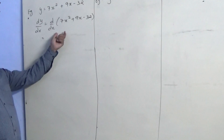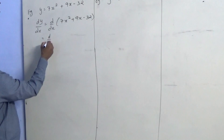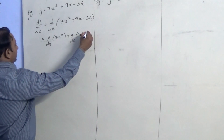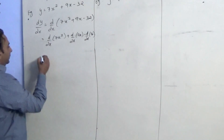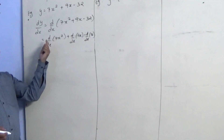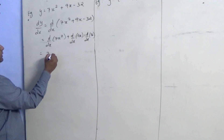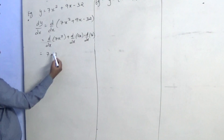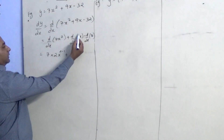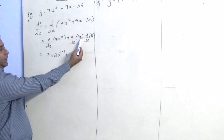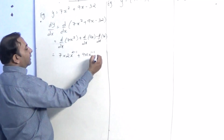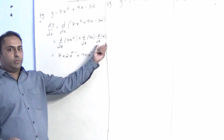We will multiply d by dx with each term. So d by dx of 7x square, plus d by dx of 9x, minus d by dx of 32. To find the derivative of 7x square, we take the power 2 in multiplication with 7, giving 7 into 2, x raised to 2 minus 1. The power of 9x is 1, so we multiply by 1, giving 9 into 1, x raised to 1 minus 1. Since 32 is a constant term, it will become 0.